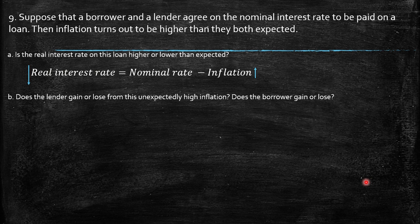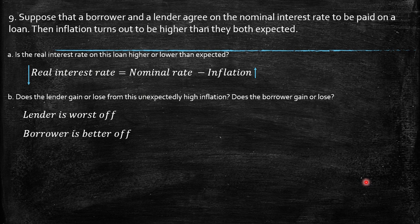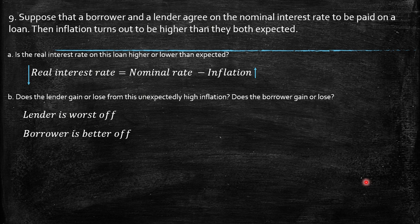Does the lender gain or lose from this unexpectedly high inflation? Does the borrower gain or lose? The lender is worse off and the borrower is better off. The lender is worse off because what matters is the real interest rate, and if the real interest rate is lower, the lender receives less return on the loan. The borrower benefits because with a lower real interest rate than originally established in the contract, he or she will be paying less in real terms.